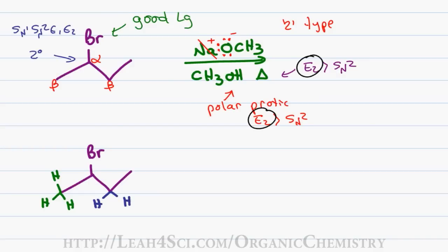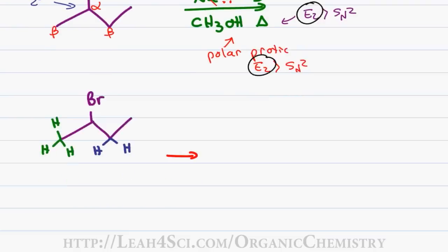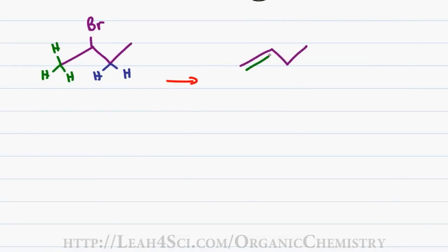In order to determine the product, we refer to Zaitsev's rule, which I went into great detail in my E1 part 2 video, but in short, Zaitsev's rule tells us that we want to eliminate to form the most substituted pi bond. If I eliminate a green hydrogen, I wind up with a monosubstituted pi bond, and if I eliminate a blue hydrogen, I wind up with a disubstituted pi bond. Since a disubstituted pi bond is more stable than a monosubstituted, the major product is going to be the blue elimination and the minor product if we show it at all will be the green elimination.